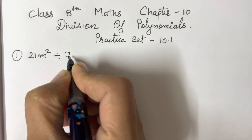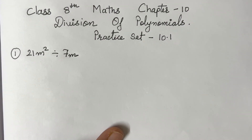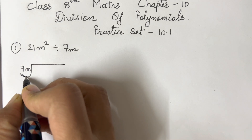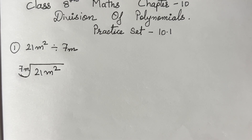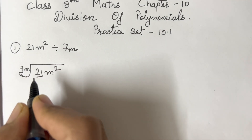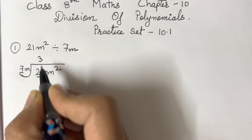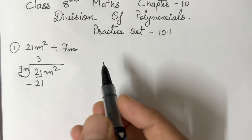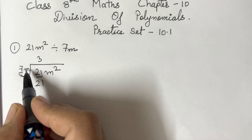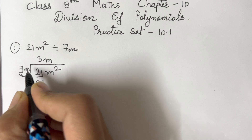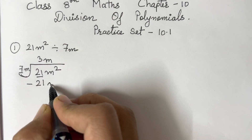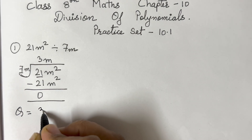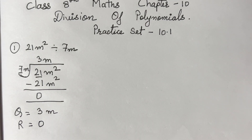The first question is 21m² divided by 7m. We know that 7 times 3 is 21, so we write 7m as the divisor and 21m² as the dividend. First we solve the numerals: 7 threes are 21. Then for the variable, m² means we need m here, since m × m = m². So you get 21m², and your quotient is 3m and your remainder is 0.